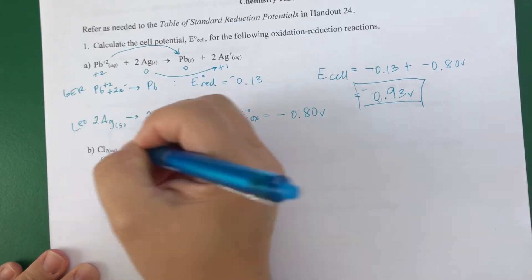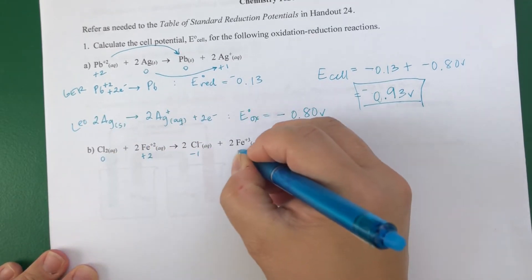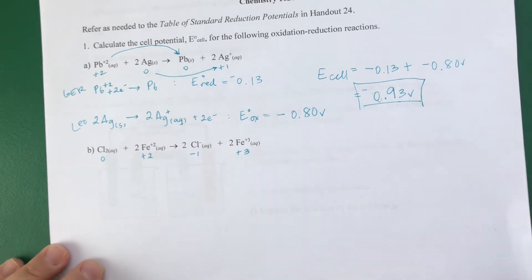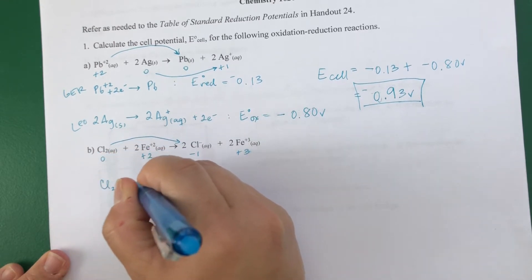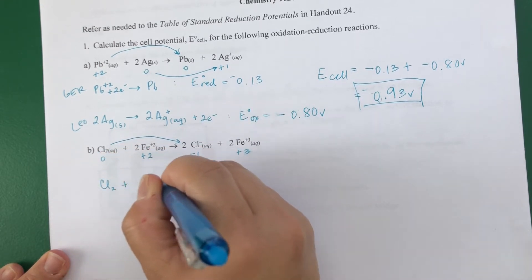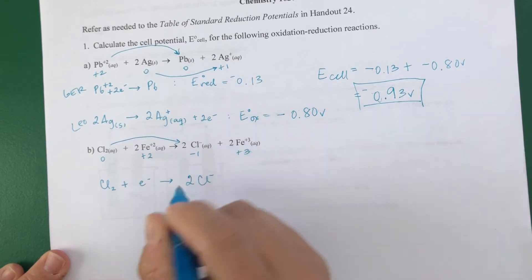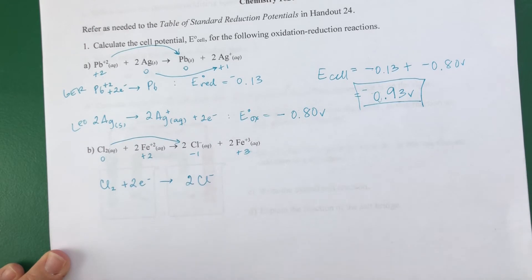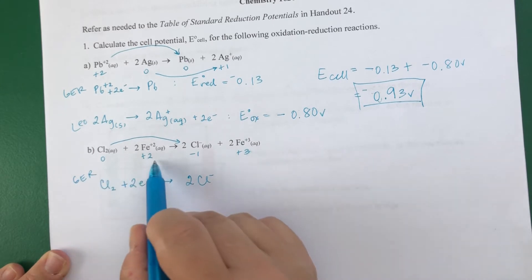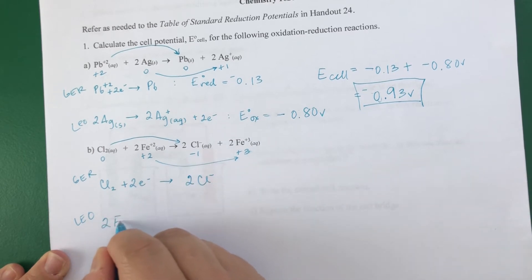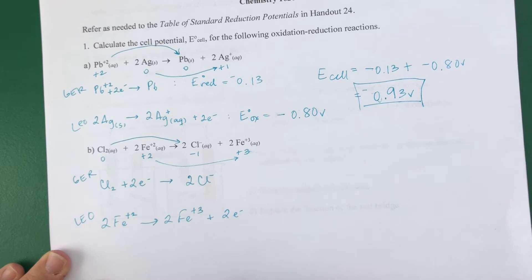My next reaction is chlorine and iron with oxidation states +2, -1, +3. So chlorine is going from 0 to -1, so it's gaining electrons. Each one is gaining one, so there's two electrons going on here. Gain electrons, that's my reduction. And then iron is going from +2 to +3, so it's losing electrons, becoming more positive. Two Fe³⁺, and two electrons. That's my oxidation.